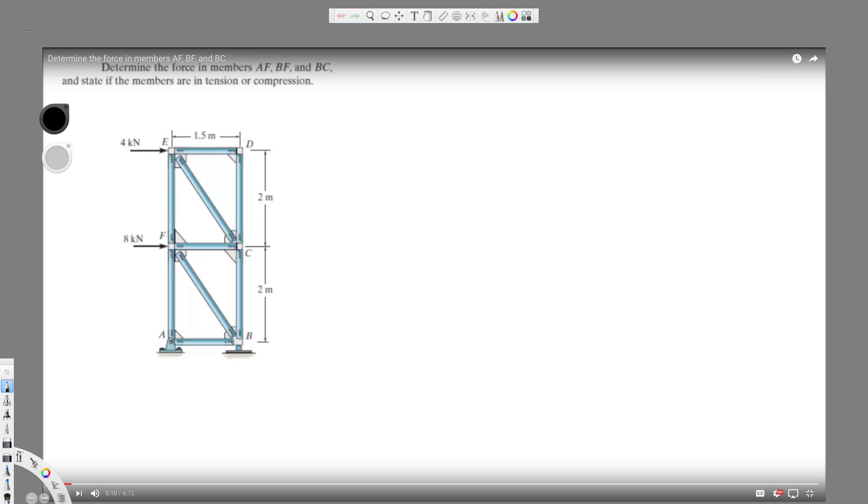Hey guys, we have this question right here asking to determine the force in members AF, BF, and BC and state if the members are in tension or compression. First we have to find the place where it's common. If you see, AF is right here, BF is right here, and BC is right here. So what you have to do is if we have the question like this, we have to cut that part out.